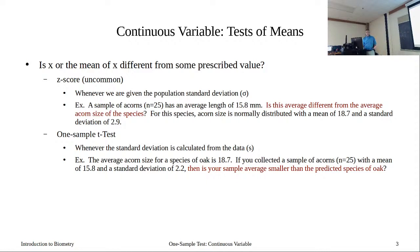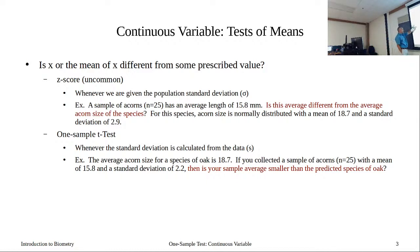The difference between these comes down to what type of standard deviation we have. If we have a population standard deviation, we're going to do a Z-score test. If we have a sample standard deviation, we're going to use our T-test. The reason for this is that if we take our X value, subtract mu, and divide by sigma, that approximates a normal distribution. We did that to calculate Z.